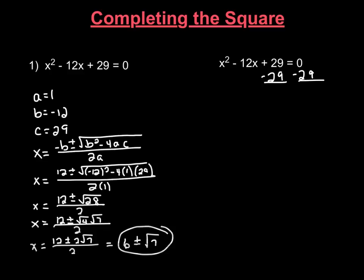Now when you do that you can bring down the x squared, you could bring down the minus 12x, and we're going to leave a space. I like to just put a box to remind me I have to put something there, and you could bring down your equal sign and the negative 29, and we're going to put an empty box on this side as well.